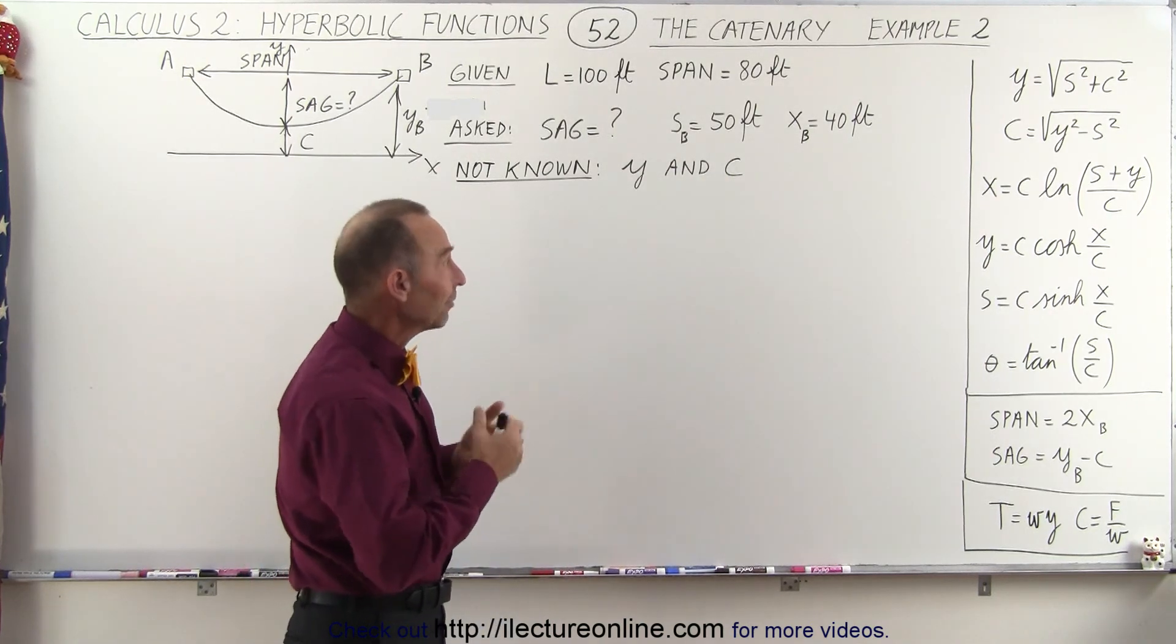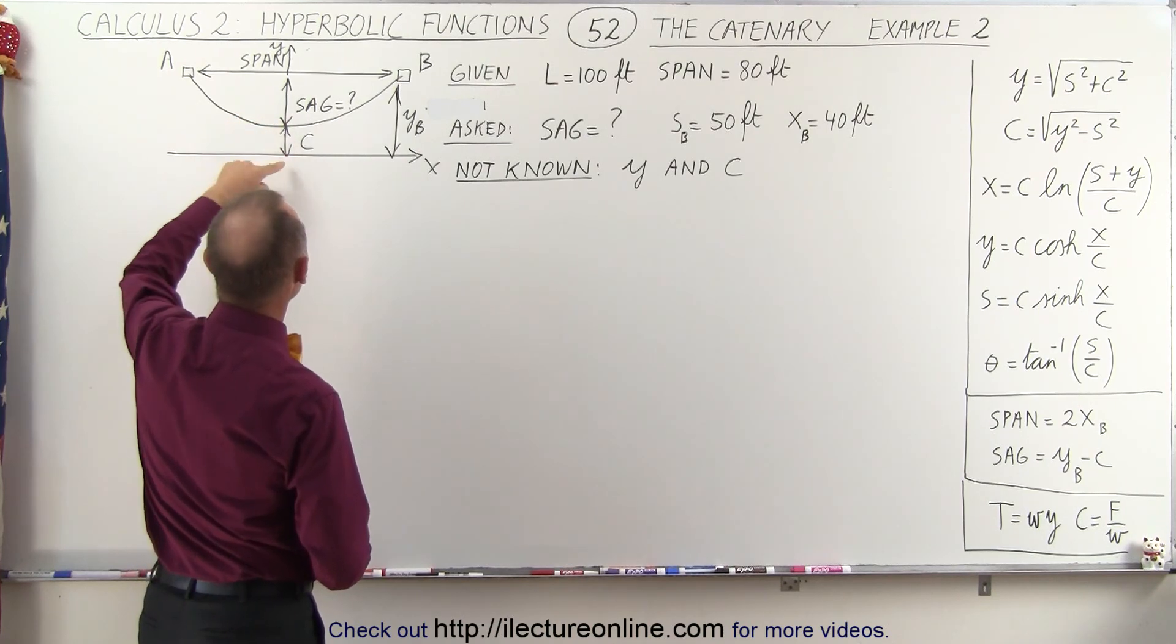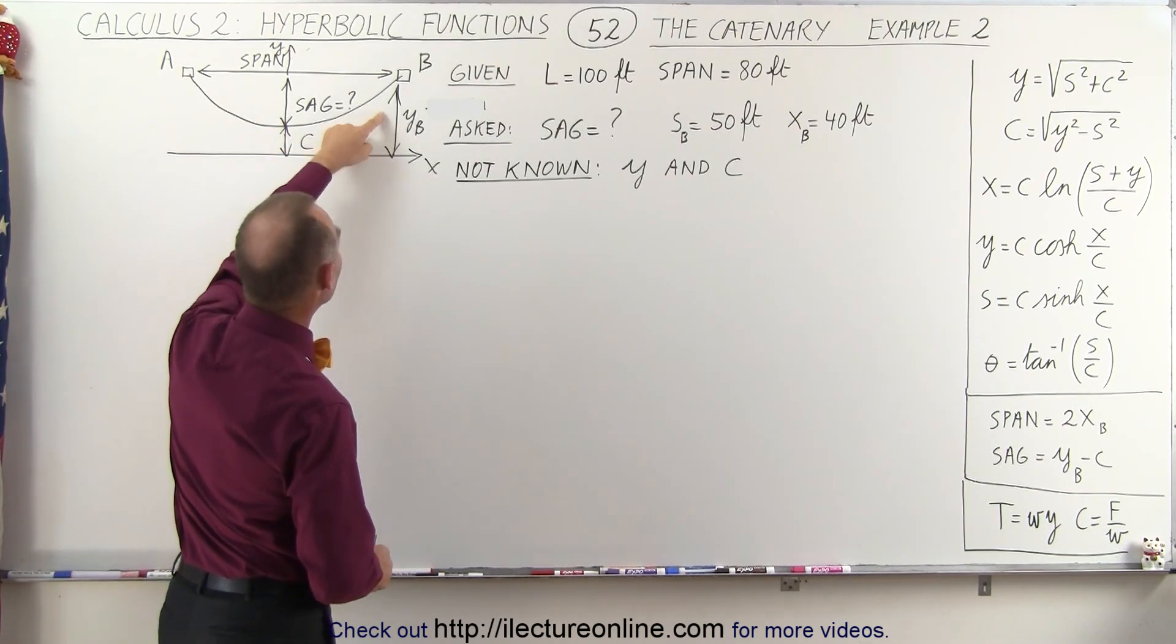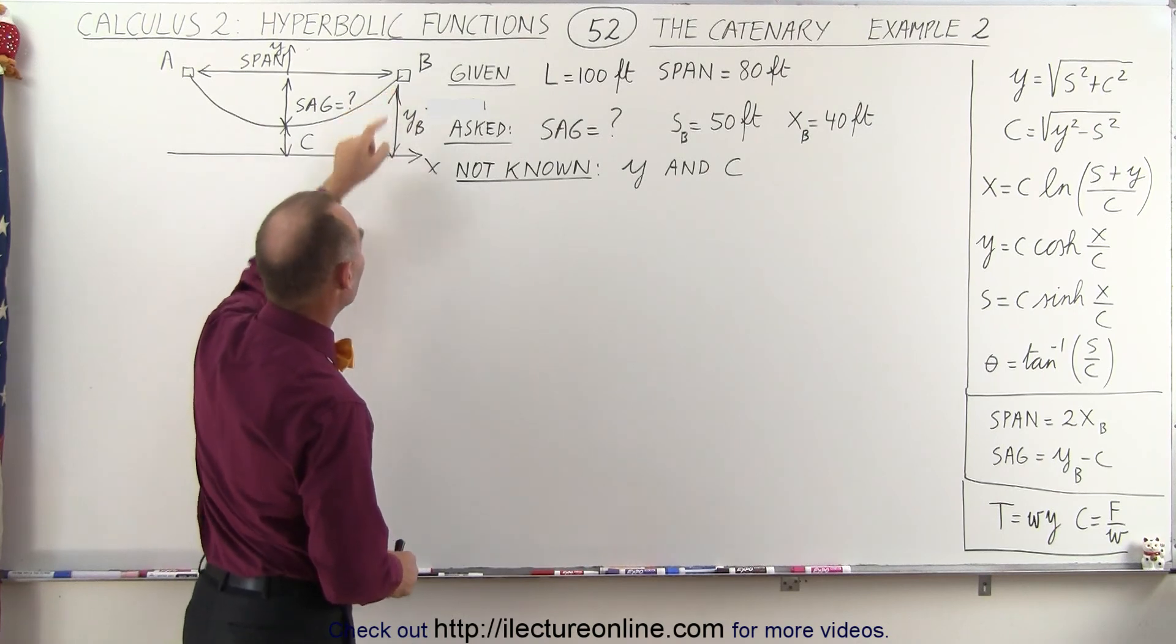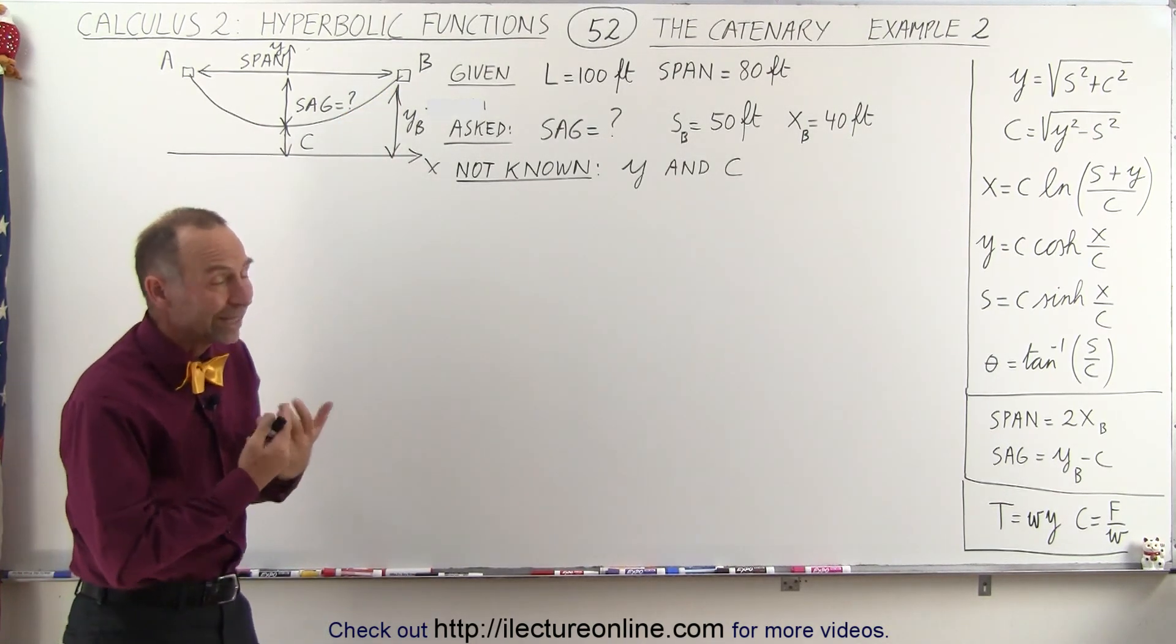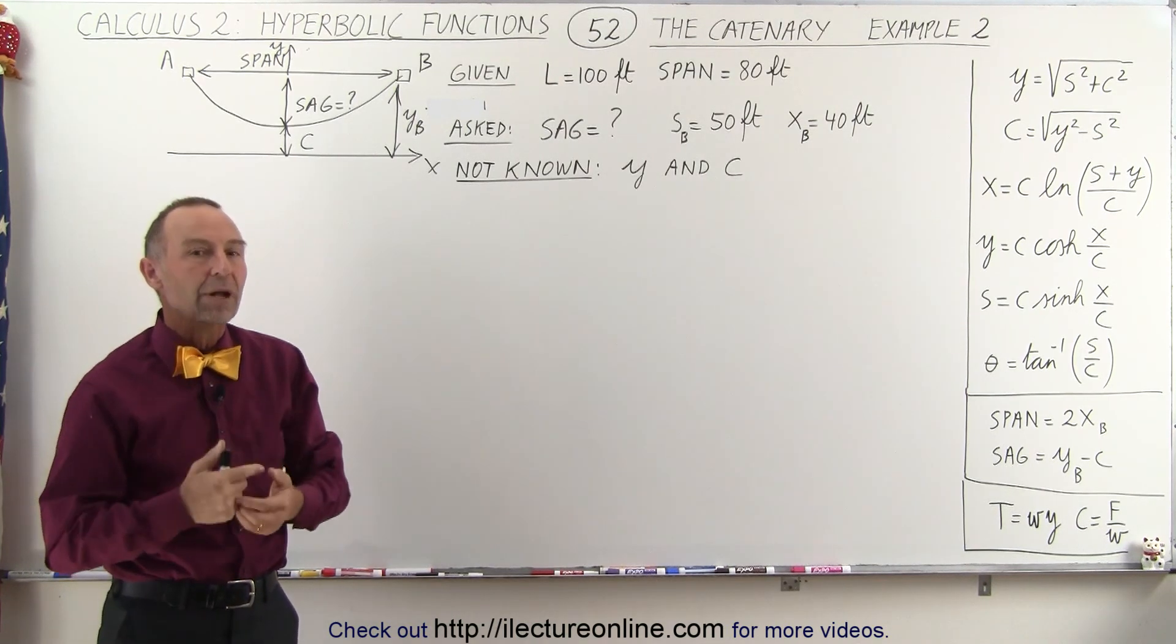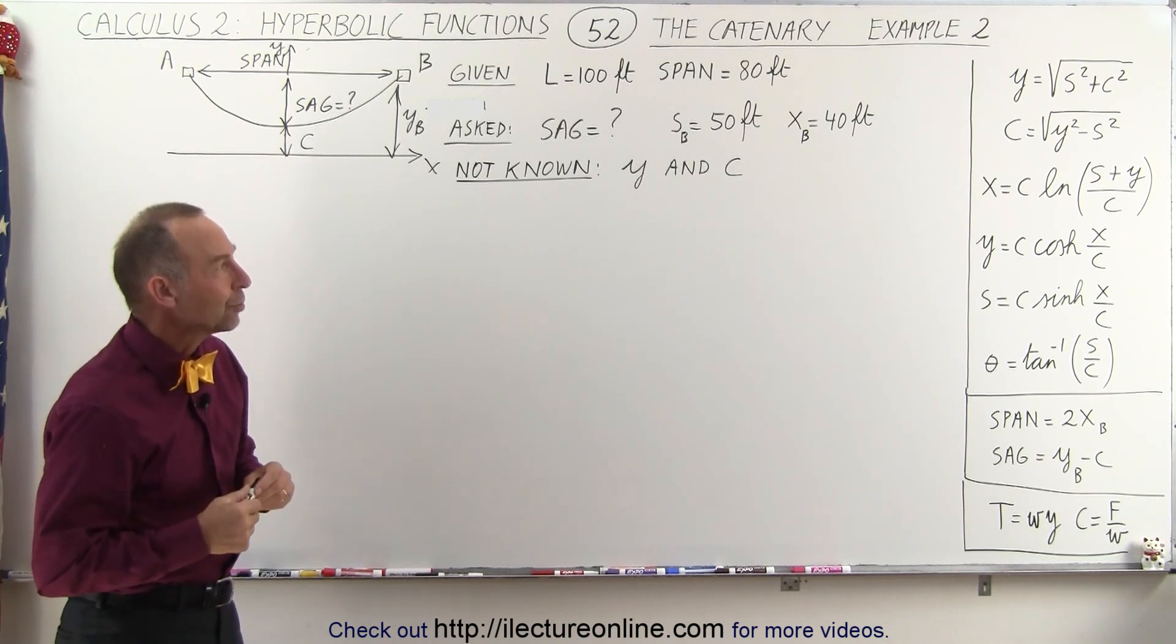Well that is a bit of a problem because they are related to one another. The c is the distance from the bottom of the cable to the x-axis and the y is the distance from the x-axis to the support, and if both of those are not known there's two unknown quantities so technically we can't solve the problem. But we can solve it using an iterative process and let me show you how we do that.